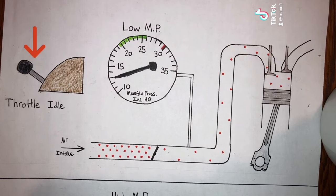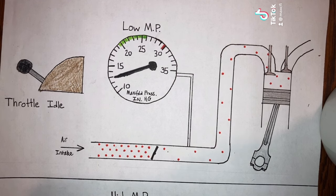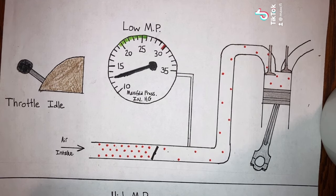With the throttle closed, very little air can get past the throttle valve. As the cylinders descend, they create a vacuum downstream of the throttle valve.